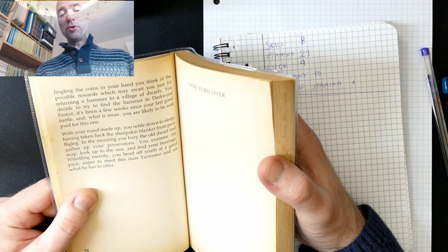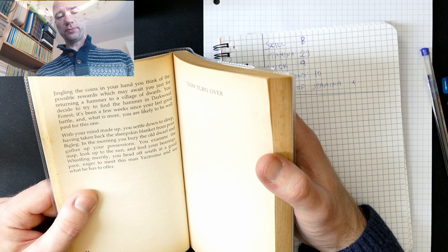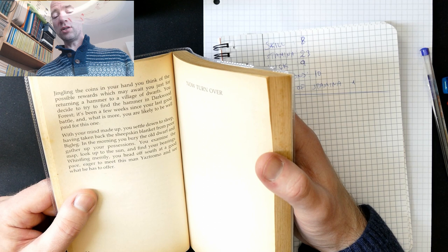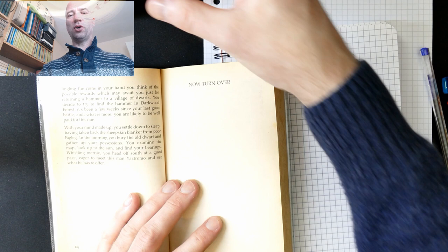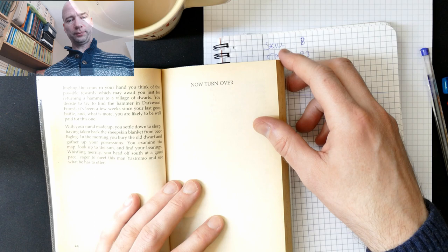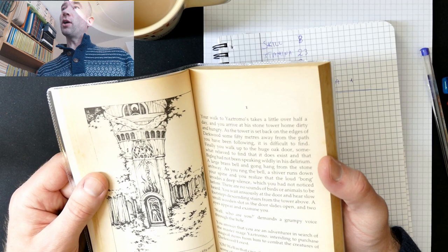With your mind made up, you settle down to sleep, having taken back the sheepskin blanket from poor Big Leg. In the morning, you bury the old dwarf and gather up your possessions. You examine the map, looking up to the sun, and find your bearings. Whistling merrily, you head off south at a good pace, eager to meet this man Yaztromo and see what he has to offer. Now, turn over. Right. So. Let's just do it like this. Right. Number one. Paragraph number one. So, here we are.